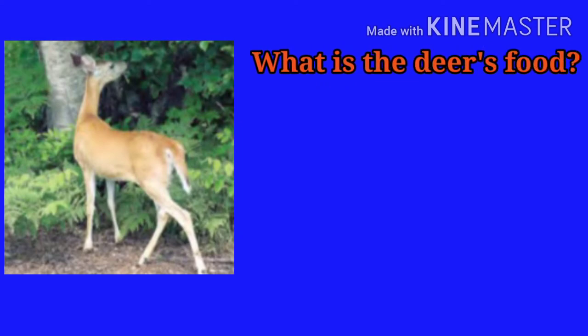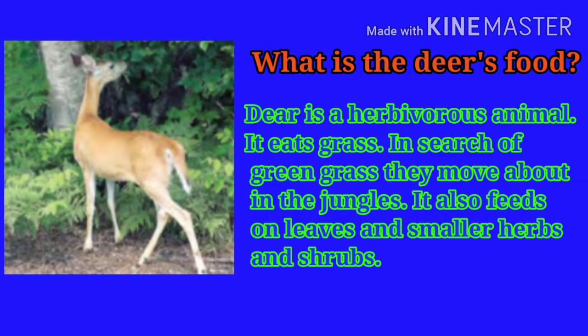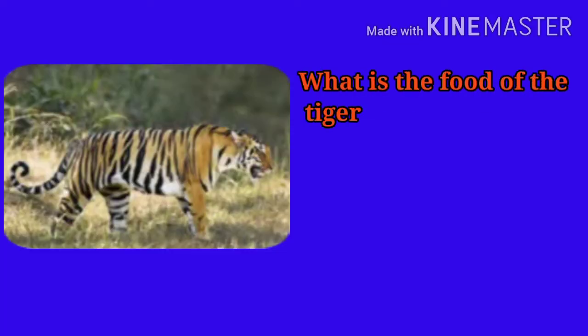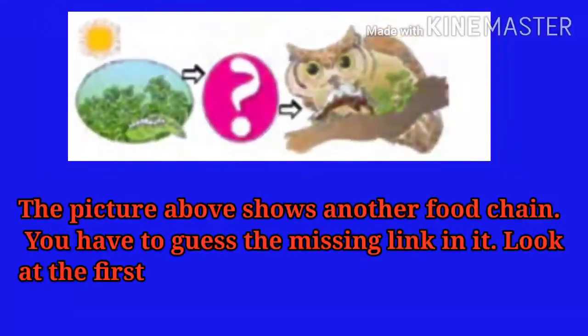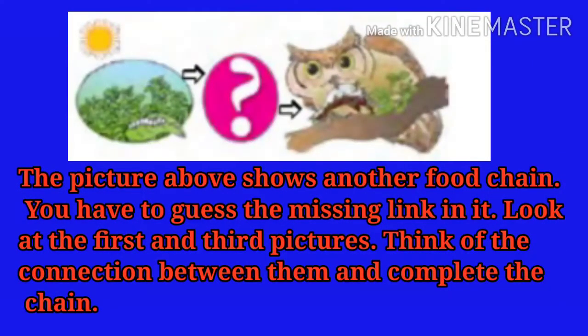Can you tell — look at this picture — what is the deer's food? Deer is a herbivorous animal. It eats grass. In search of green grass, they move about in the jungles. It also feeds on leaves and smaller herbs and shrubs. What is food for the tiger? Tiger is a carnivorous animal. It feeds by hunting on small prey. The flesh of these animals is food for the tiger.